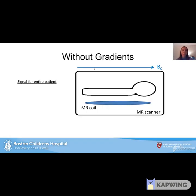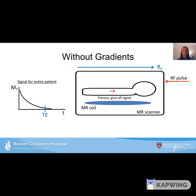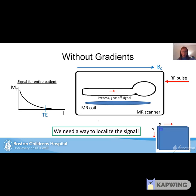Up until this point I've described the NMR experiment. Now let me explain gradients — extremely important for imaging. When we send an RF pulse and tip protons into the transverse plane, they precess and give off a signal. But so far, that signal is an aggregate from the entire patient. We need to know exactly where the signal comes from to reflect it in the image, so we need a way to localize the signal — and one way is with gradients.